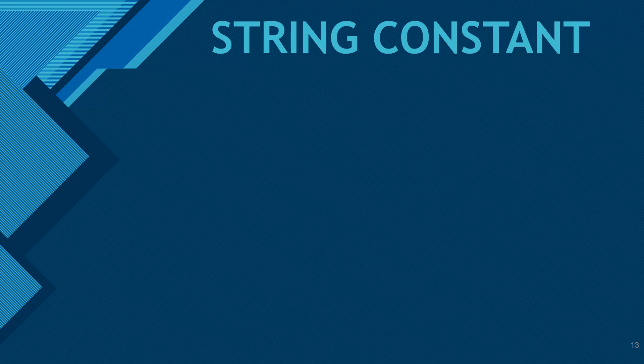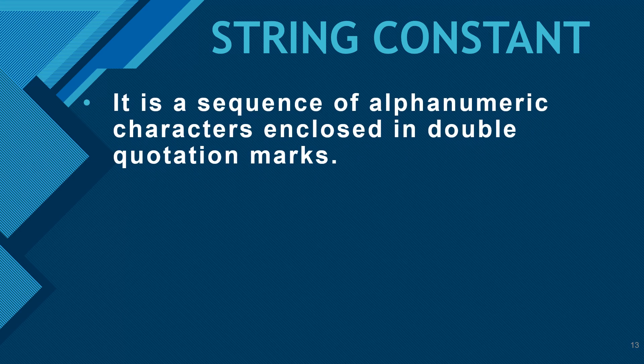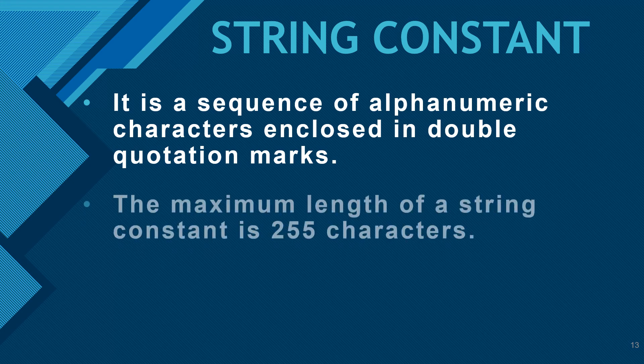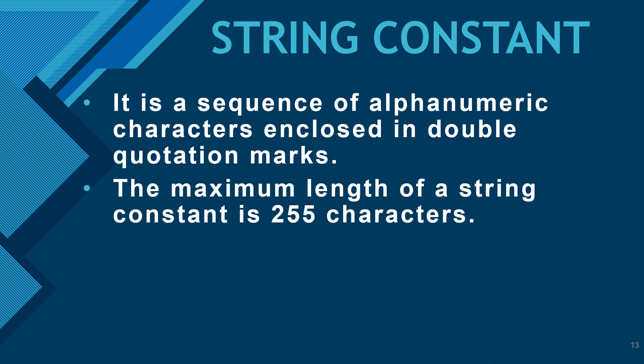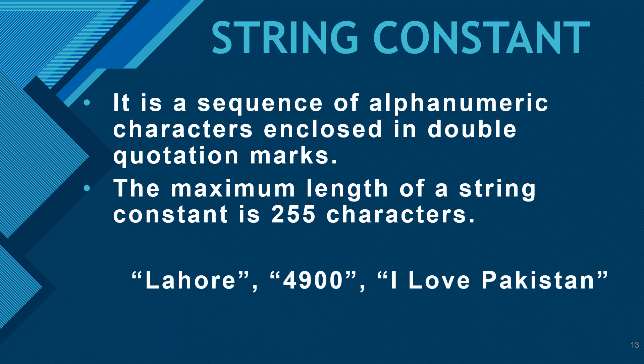A string constant is a sequence of alphanumeric characters — meaning a combination of alphabets and numbers — enclosed in double quotation marks. The maximum length of a string constant is 255 characters. For example: 'Lahore', '4900', 'I love Pakistan' — all of these are strings written in double quotes.